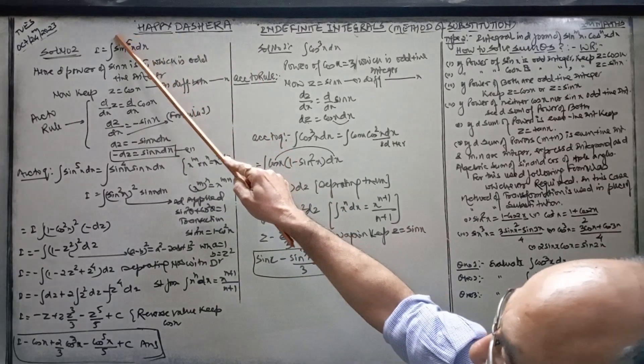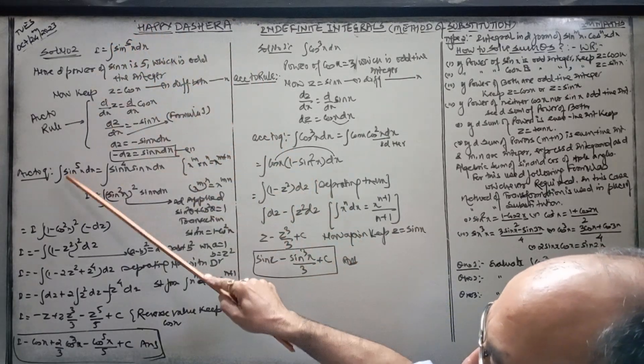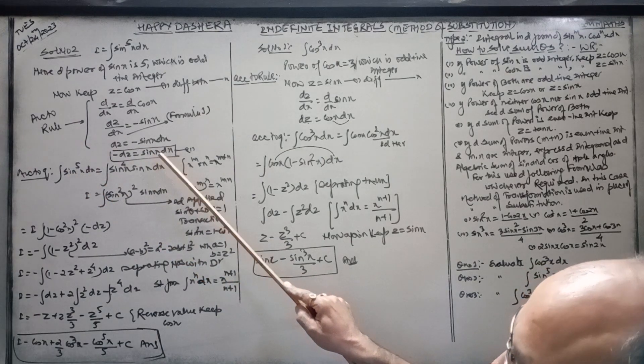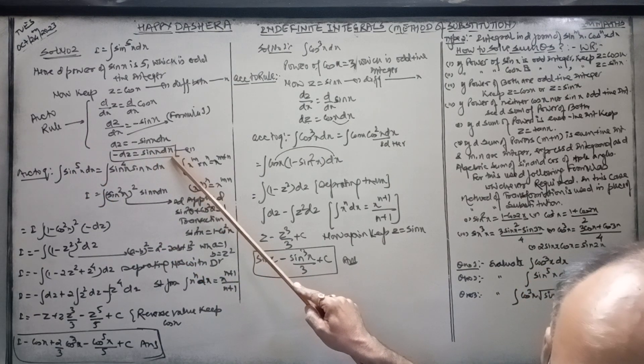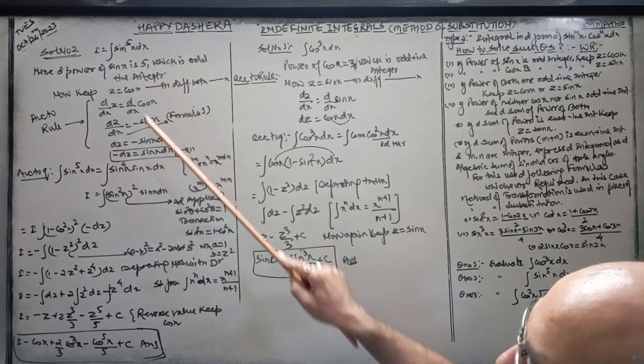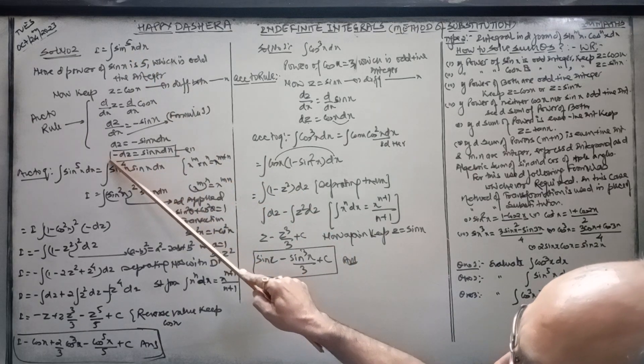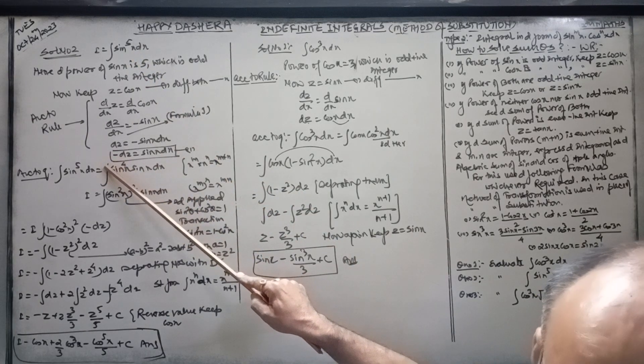Now, because it has an odd power, and here sin x dx is 1, it means out of this 5 power, 1 power you have this. Now, the remaining power of sin x is 4.